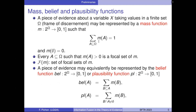As we have seen, there exist equivalent representations of a mass function. In particular, the belief function assigns to A the sum of the masses given to the subsets of A. We have the plausibility function, which allocates to the subset A the sum of the masses given to the subsets that have a non-empty intersection with A.